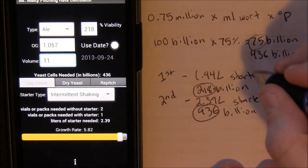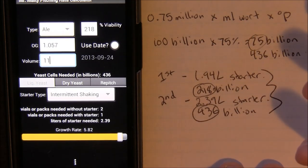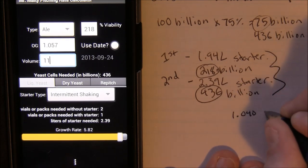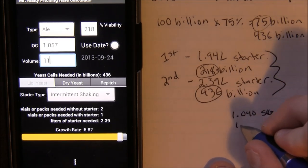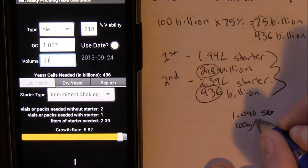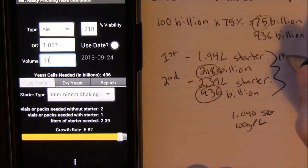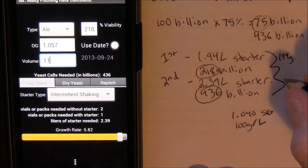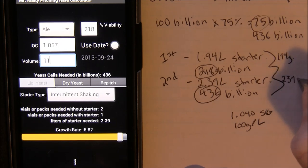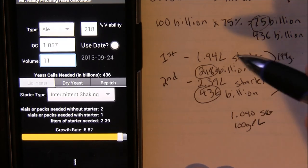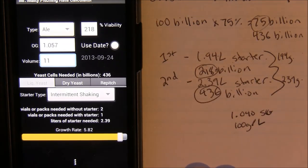Now that we know how big the starters need to be, let's talk about what actually goes into a starter. It's pretty simple — you want a starter of around 1.040 specific gravity, and the easy way to do this is 100 grams of dry malt extract per liter of starter. So for the first stage we need 194 grams in 1.94 liters, and the second stage would be 239 grams of DME. You just measure that out, boil it up — you don't even need to add hops or anything like that.